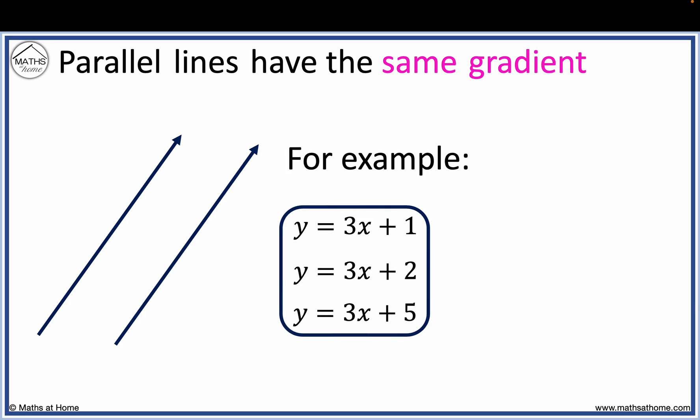The gradient of a line is the number multiplying the x. These lines all have a gradient of 3. They are all parallel. Here are another group of equations which are all parallel. They all have a gradient of 2. As long as the number in front of the x's is the same, the lines are parallel.